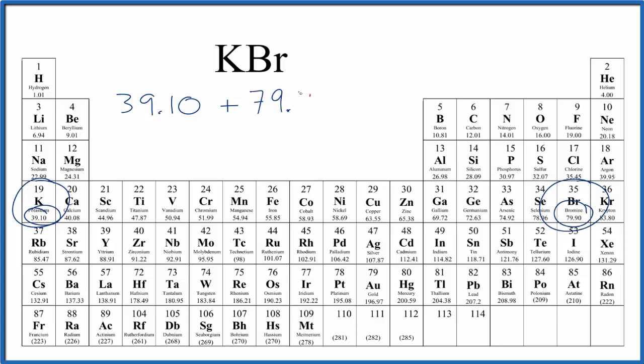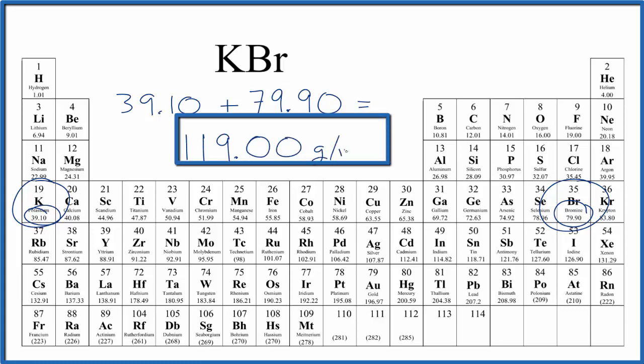and again, the units are grams per mole. So when we add these two numbers together, we end up with 119.00, and the units are grams per mole.